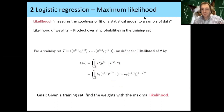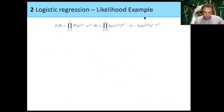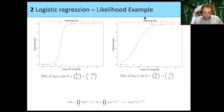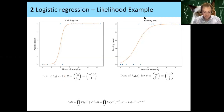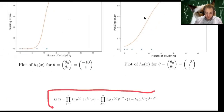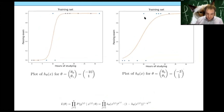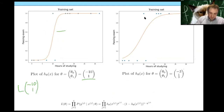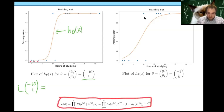I want to do two examples and actually calculate the likelihood for both. We have two different thetas, and for each we can calculate the likelihood — how likely is it that this theta models our training set? For theta (−10, 1), we need to take the product over all 12 training examples.